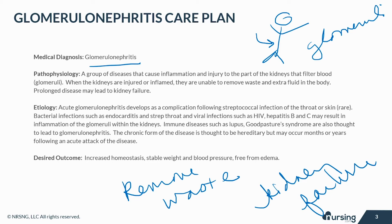Acute glomerulonephritis develops as a complication following streptococcal infection of the throat or skin, although this is rare. Bacterial infections such as endocarditis and strep throat, and viral infections such as HIV, hepatitis B, and C may result in inflammation of the glomeruli. Immune diseases such as lupus or Goodpasture syndrome are also thought to lead to this issue. The chronic form is thought to be hereditary, but may occur months or years following an acute attack.